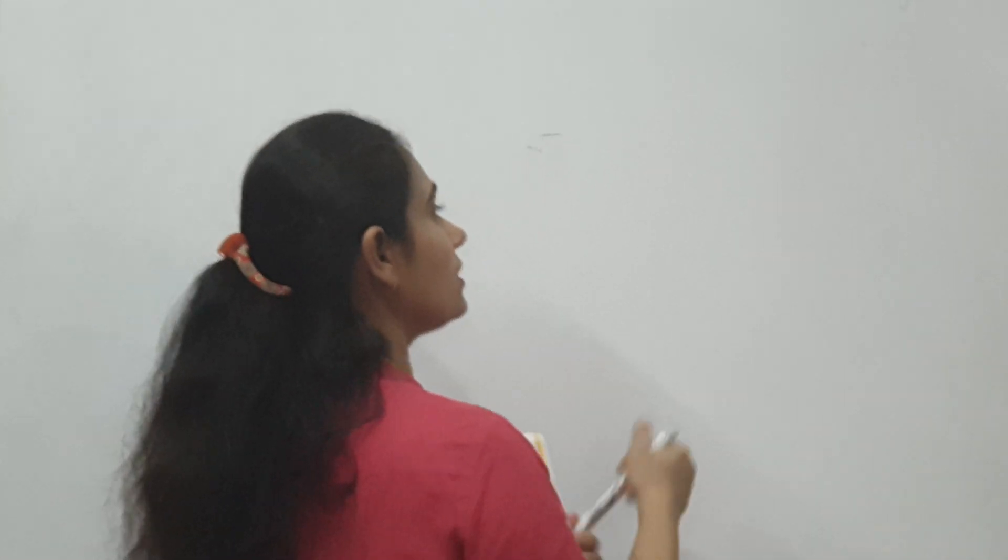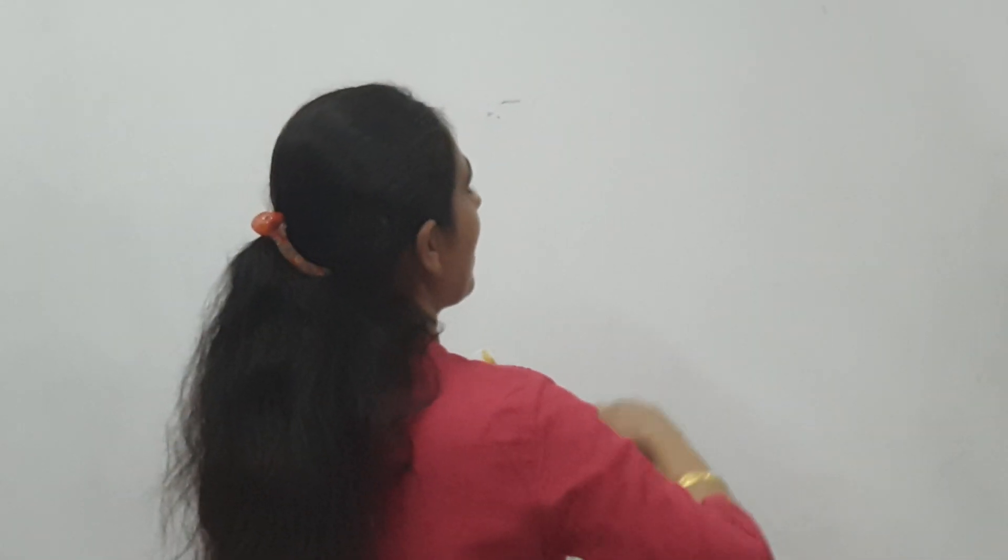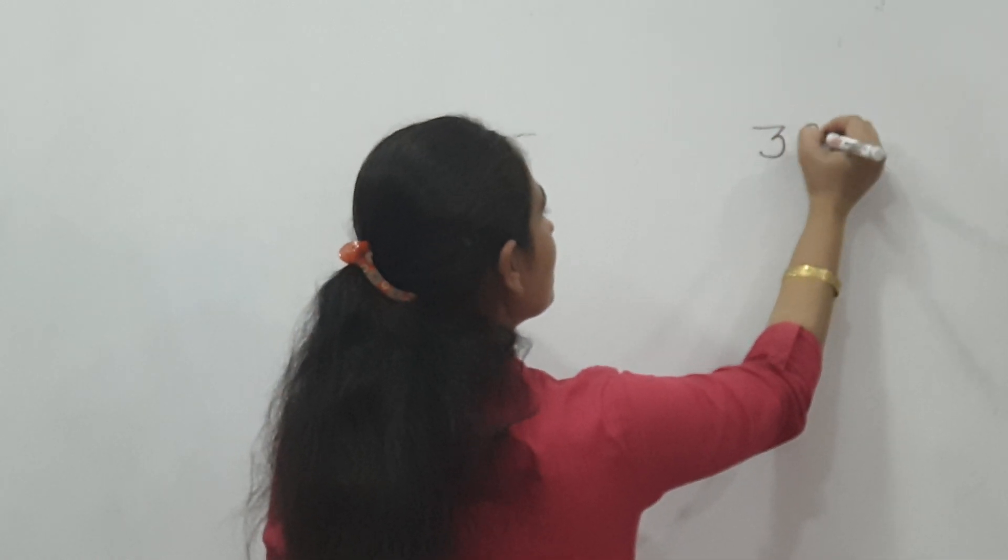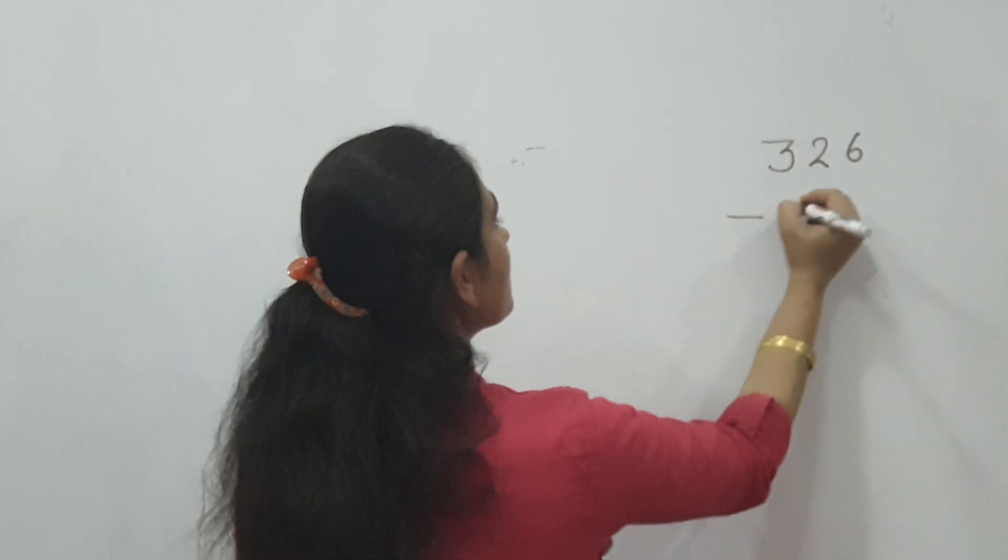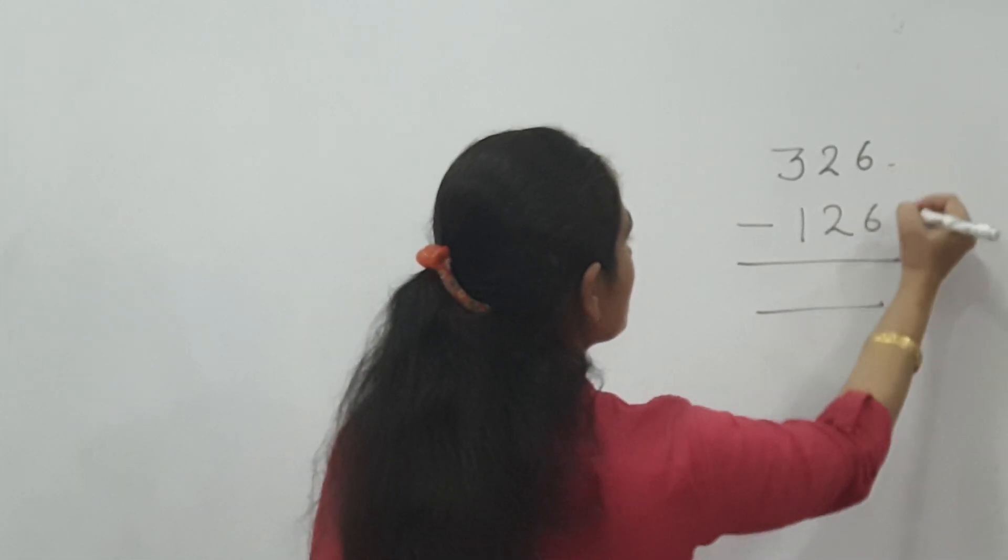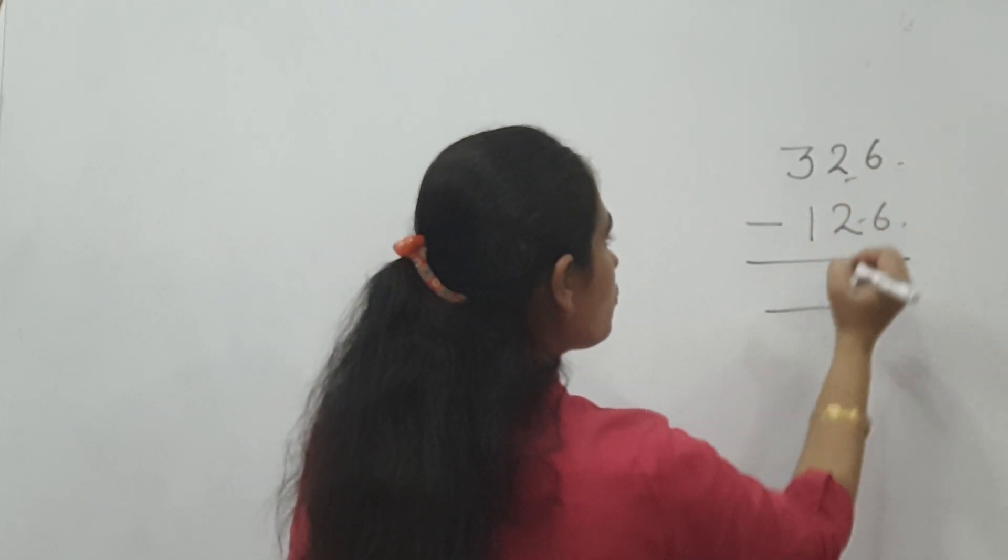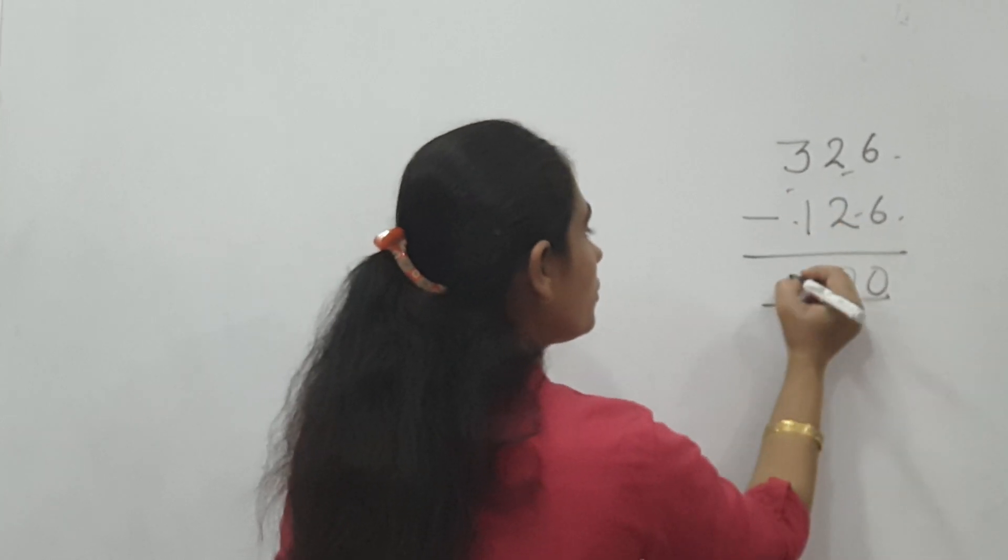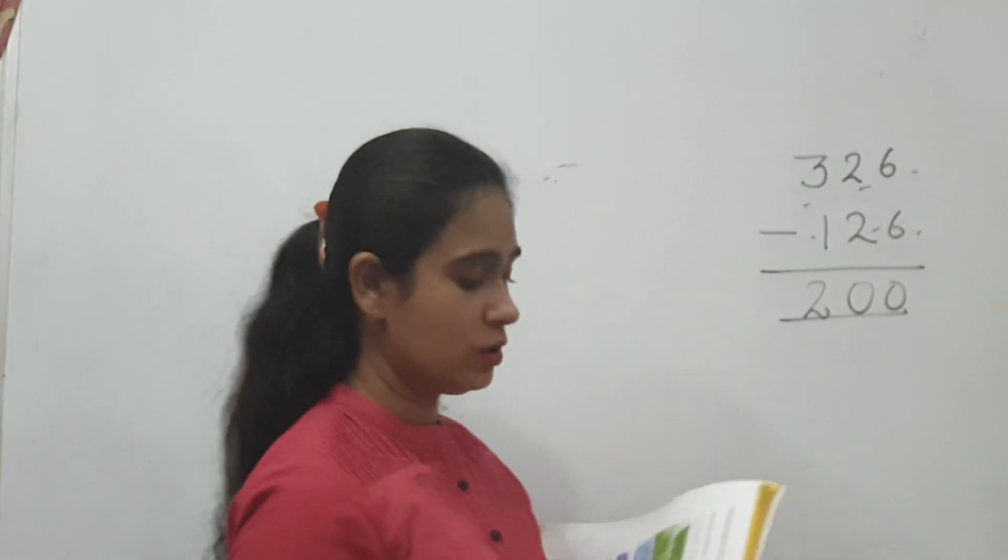326 given. 126 fly away means flew away. Now what will you do? You will do cut means subtract. Some birds have flown away, let us subtract. You have your third column also there. Where will you solve this? 326 minus 126. You will cut this, 6 minus 6 zero, 2 minus 2 zero, 3 minus 1 two. The answer will be 200.